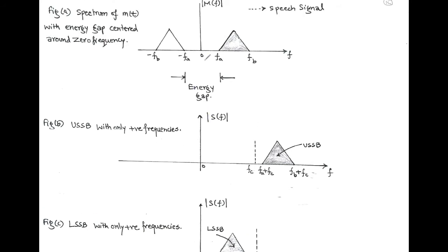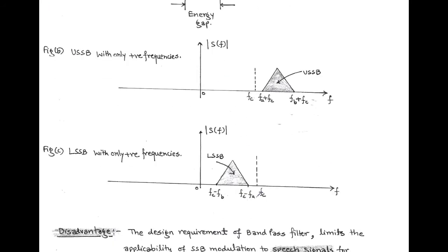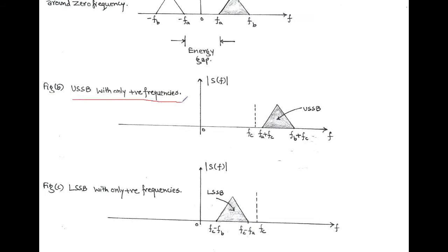In figure A, the spectrum of the message signal is centered around zero frequency. After modulation, this spectrum is shifted to ±F_C. The frequencies above F_C are called upper single sideband, and the frequencies below the carrier frequency are called lower single sideband. Figure B shows the upper single sideband considering only positive frequencies, and figure C shows the lower single sideband, also considering only positive frequencies.